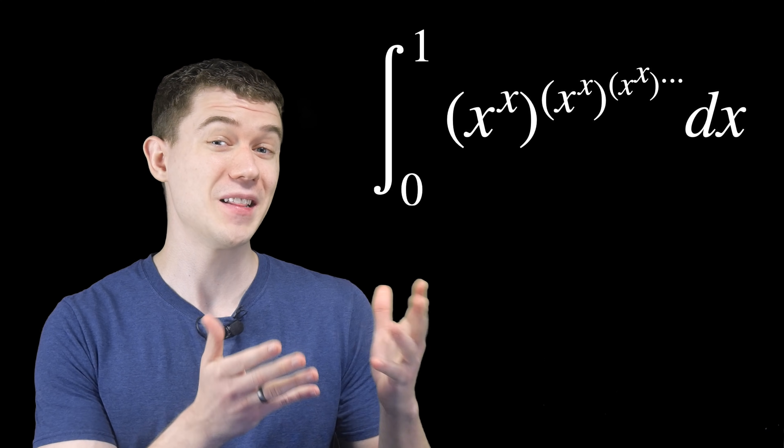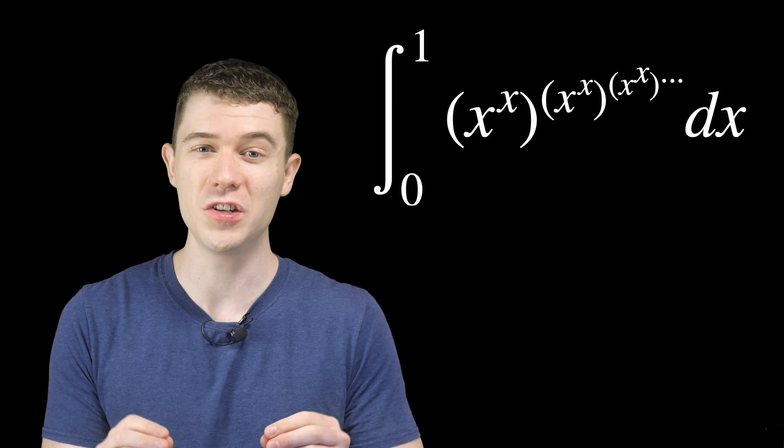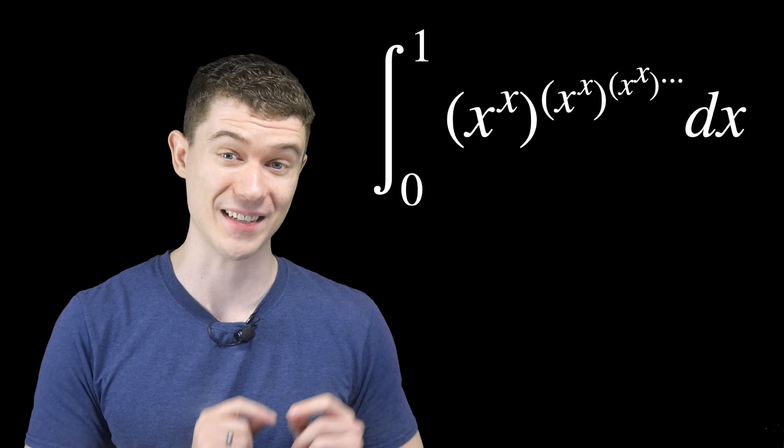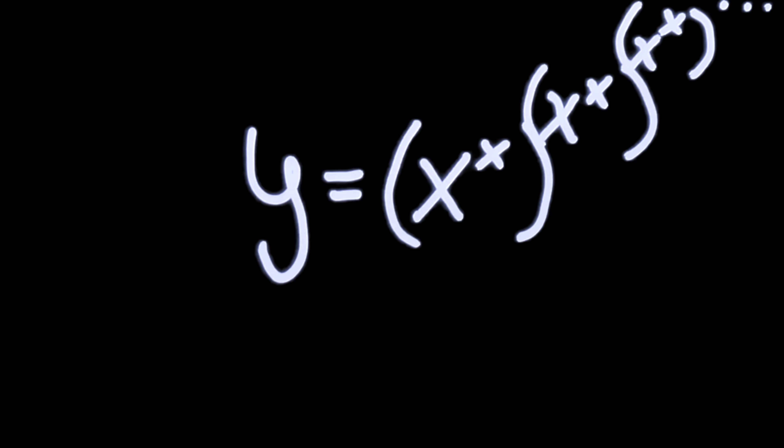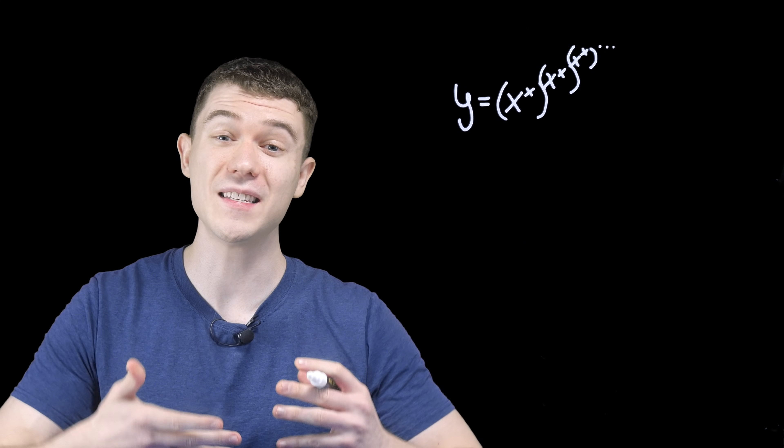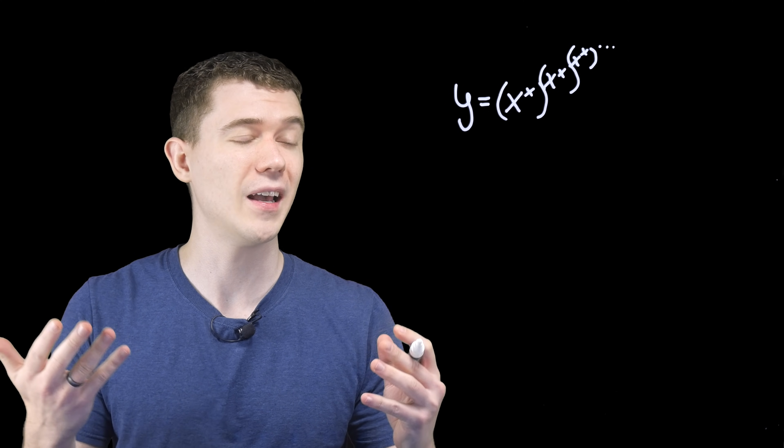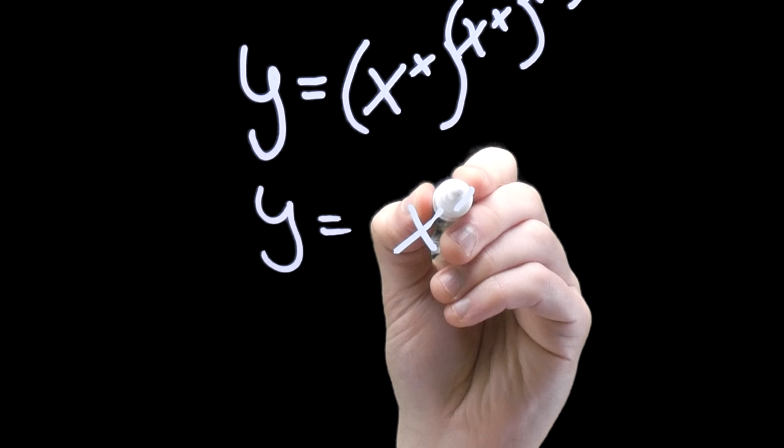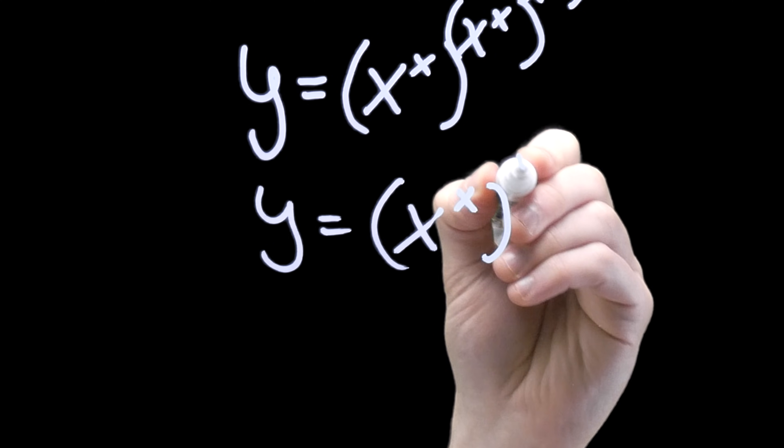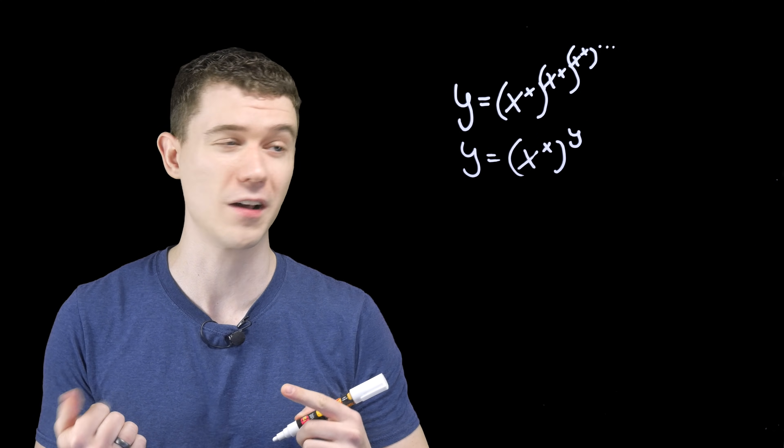Now that we have all the tools we need, let's get after this problem. Now I certainly don't know how to integrate this as is, let's find a different representation for our integrand and integrate that. I'll just call our integrand y, and the first thing to notice about it is that it's this ascending tower of x to the x. It's like this infinite iteration. And another way to write this would be y equals x to the x all to the y.